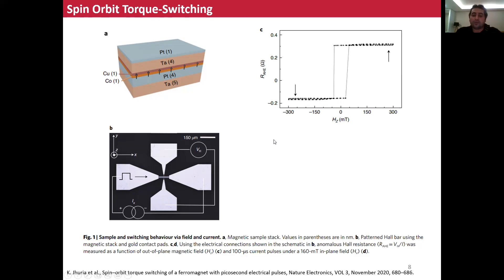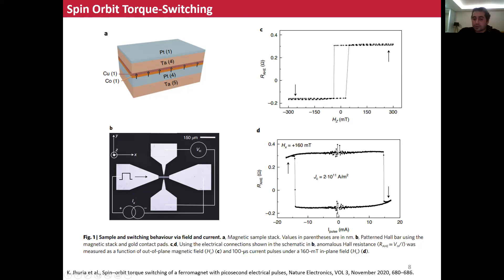When we sweep the current, we can observe switching under an assisting field. There is an assisting field applied in order to break the symmetry of the magnetic anisotropy — we need to apply a constant magnetic field directed along the X direction. Under this assisting field, when we sweep the current, we can observe the magnetization switching. When we check the resistance states, they are the same as those observed in the magnetic field sweeping experiment. This is a very beautiful observation of magnetization switching by using currents.